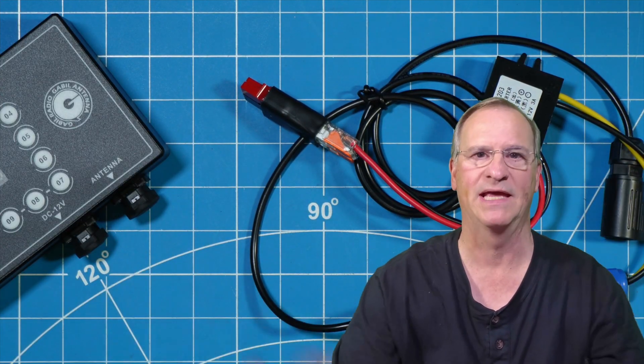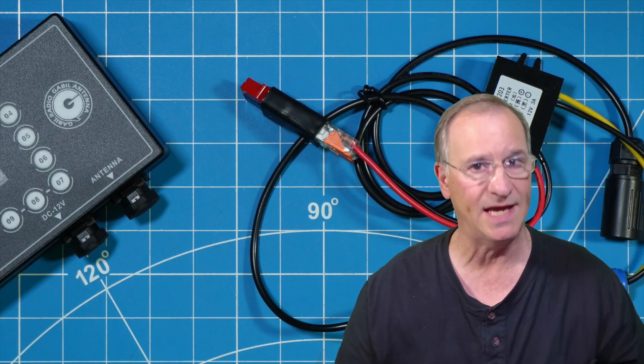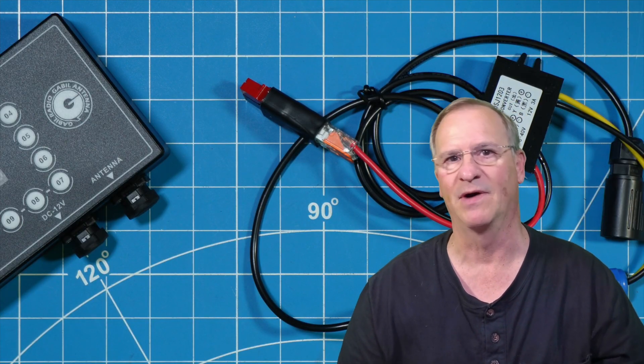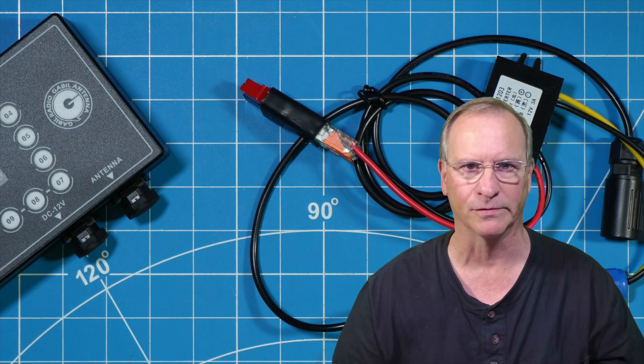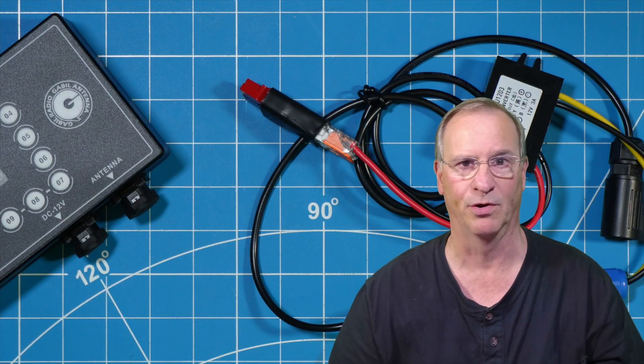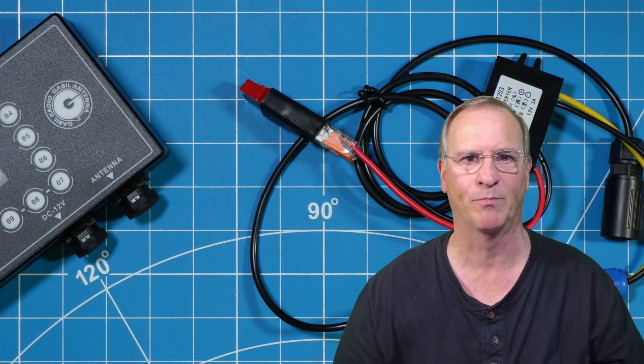I do this every time I get a new radio these days, and then later, when I have time, I pull down the bin, get my crimper, and then I will put on power poles in a more permanent way.